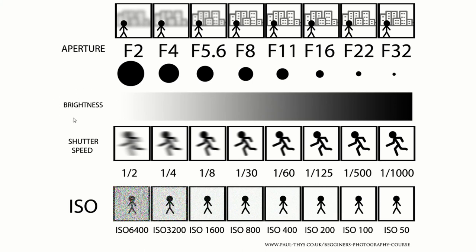Now the brightness is there just to say what the exposure is going to do. Anything that moves from the right-hand side to the left-hand side will make the picture brighter; anything that moves from the left-hand side to the right-hand side will make the picture darker. For example, if you start at f2 and then you push towards f32, the picture is going to be getting darker, and then if you're shooting at one thousandth of a second and then you push up towards one half of a second, the picture is going to get brighter.